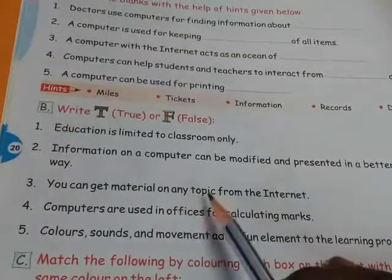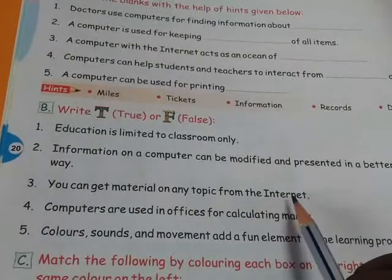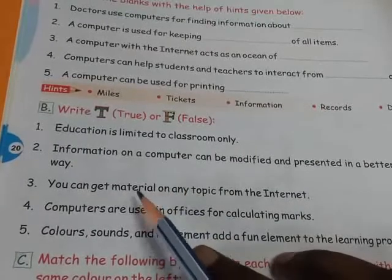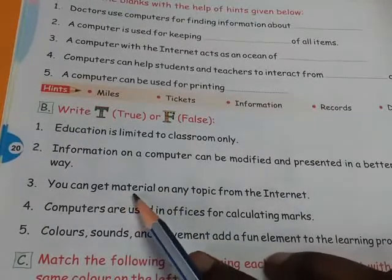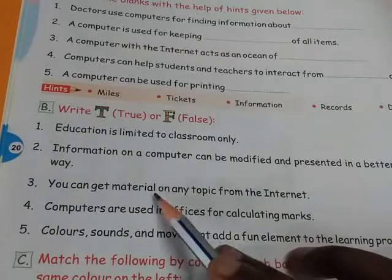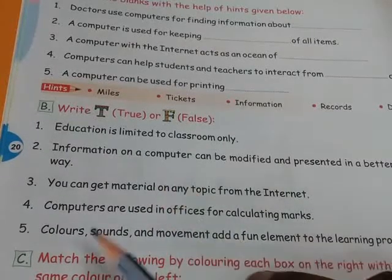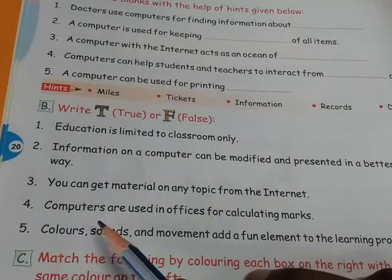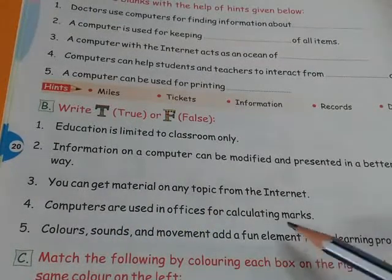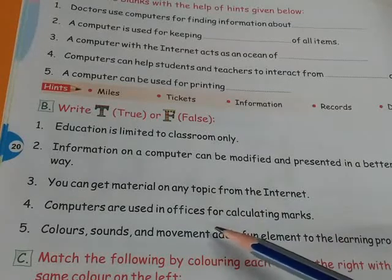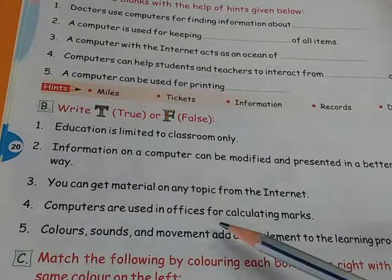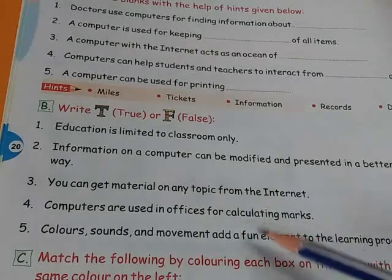Statement three: You can get material on any topic from the internet. Aapko internet se koi bhi topic pe usse related kuch na kuch zaroor mil jayega — kuch na kuch material mil jayega. Yeh sahhi baat hai ya galat? You need to tell whether this statement is true or false. Statement four: Computers are used in office for calculating marks. Computer ka use hum karte hain office mein for calculating marks. Aapko yeh batana hai — yeh line sahhi hai ya galat hai.